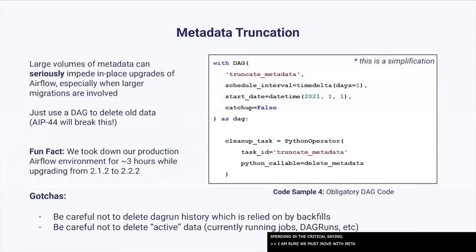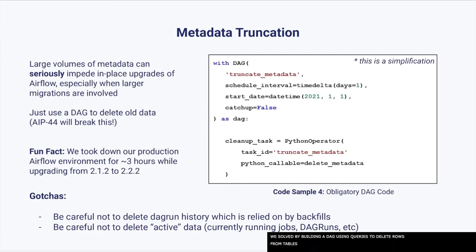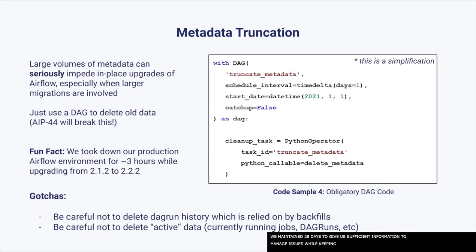We encountered some issues with the Airflow metadata getting too large, leading to performance degradations and extremely long-running migrations. We solved this by building a DAG which uses ORM queries within a Python operator to delete rows from any tables containing historical data, such as the DAG run or task instance table. We decided to maintain historical data for 28 days because it gave us sufficient information to track performance and manage issues while keeping the volume of data under control.